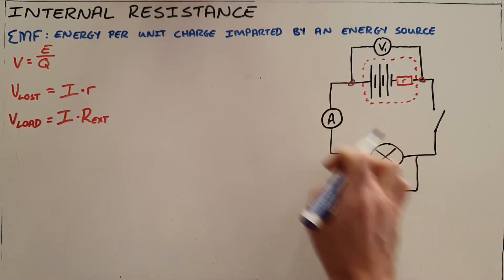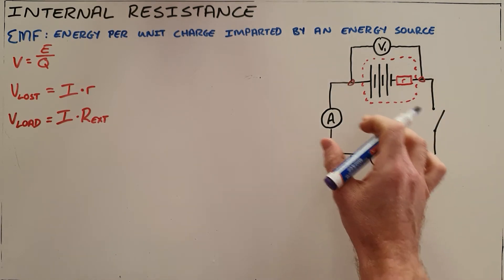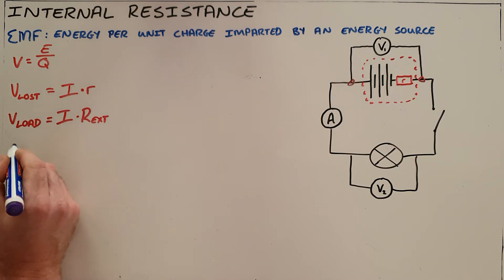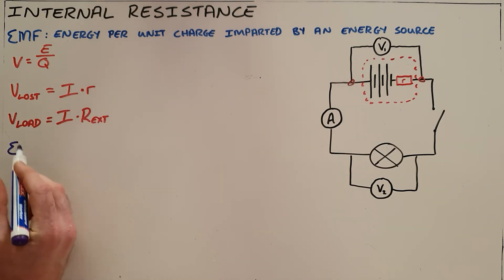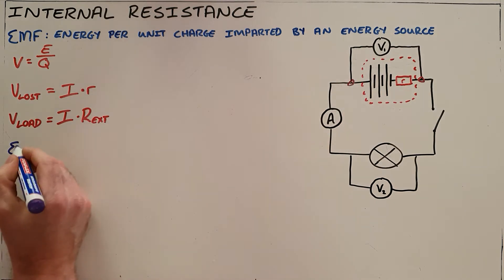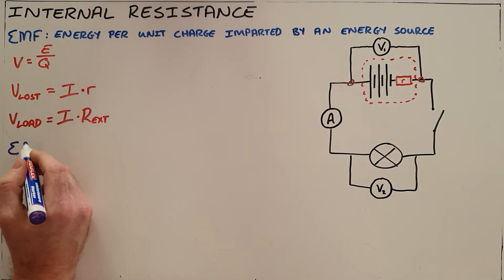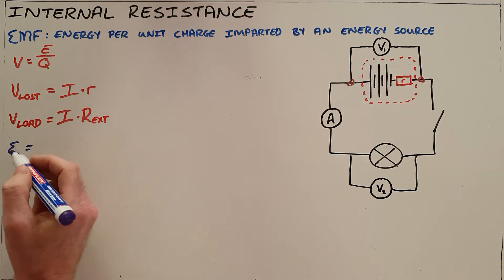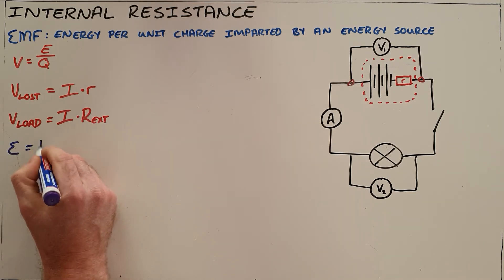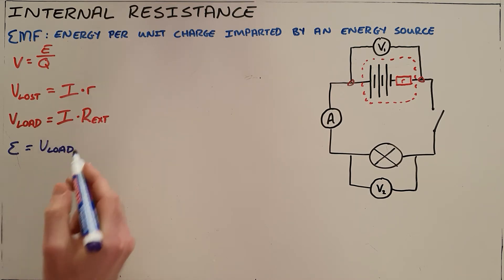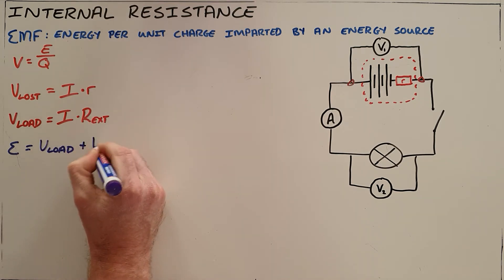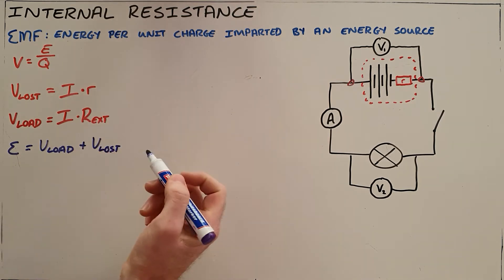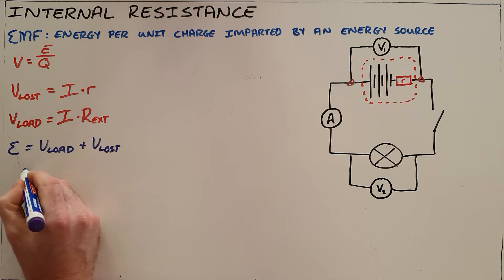This tells us that the total amount of energy a battery provides is no longer going only to the external circuit, but is now the sum of both the internal and external circuits. We call that total amount of energy per unit charge imparted by an energy source the EMF, also known as the electromotive force. The EMF of a battery equals the load voltage — the energy usable in the external circuit — plus the lost volts.